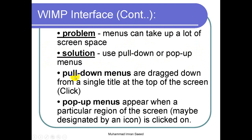The first type is the pull-down menu, which you have used in Microsoft Word and Excel. Whenever we take the cursor to the menu it does not drop down automatically — we have to click, and when we click the menu opens. Pull-down menus are dragged down from a single click at the top of the screen on the title. For example, clicking on 'File' opens the file menu, clicking on 'Edit' opens the edit menu. Then there is the pop-up menu, which appears when a particular region of the screen — possibly designated by an icon — is clicked.